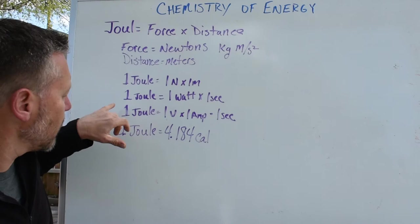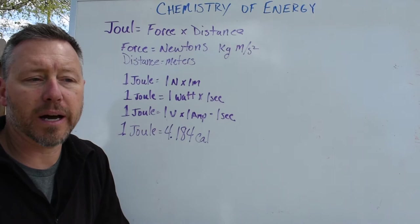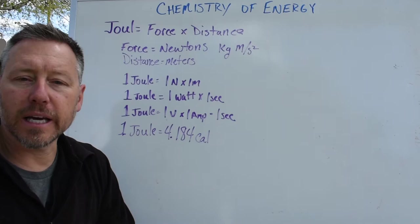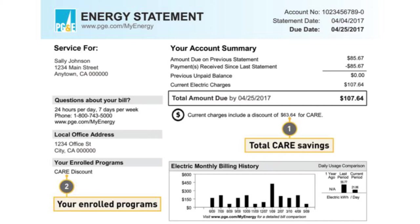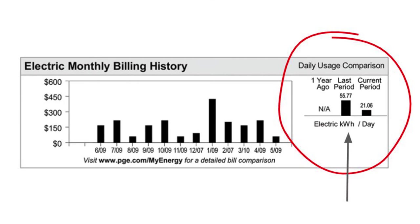Well a joule is equal to one newton times one meter and a joule is also equal to one watt times one second. Well you might have heard of watts in terms of electrical power. So if you look up your power bill as you see here on the screen, then your power bill is going to be shown in terms of kilowatt hours and that's how PG&E bills you, in terms of kilowatt hours.